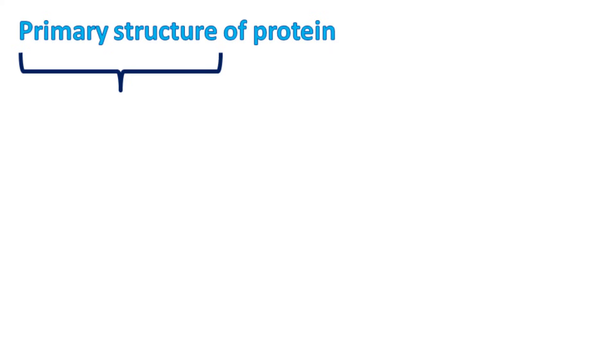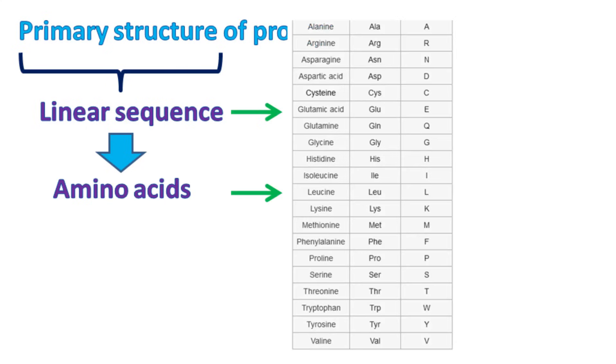Primary structure of protein is a linear sequence of amino acids present in the protein. This linear sequence of amino acids is either written in a three-letter or a one-letter form.